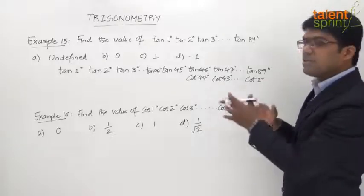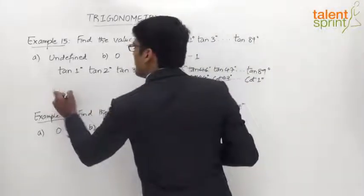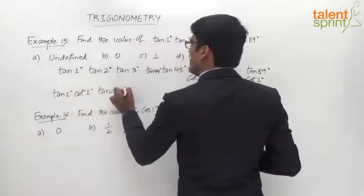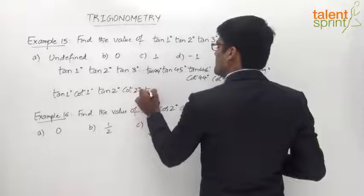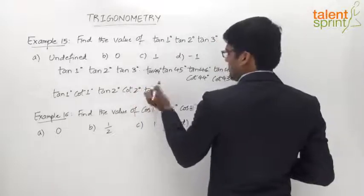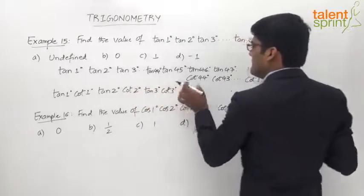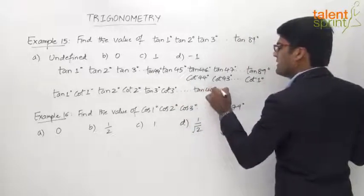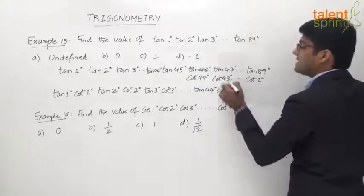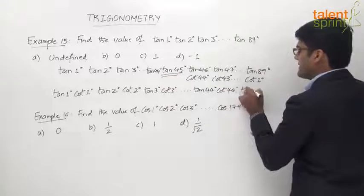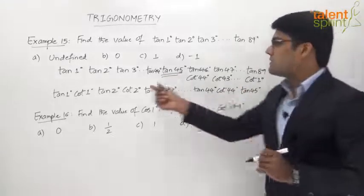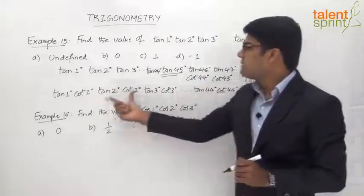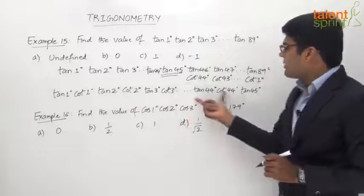If we reposition the terms, we can pair them as: tan 1° × cot 1°, then tan 2° × cot 2°, and so on up to tan 44° × cot 44°, with tan 45° as the remaining unpaired term. The first term tan 1° and the last term cot 1° come together; likewise tan 2° and cot 2°, all the way through tan 44° × cot 44°.